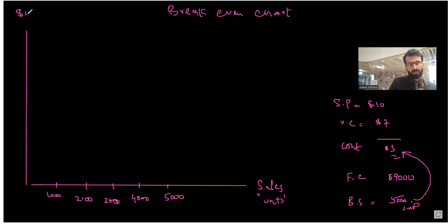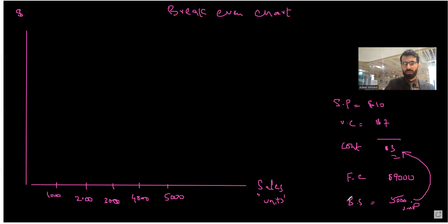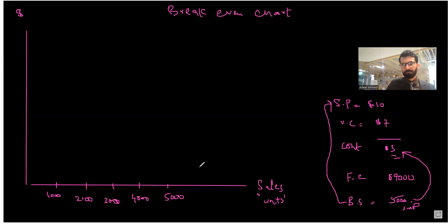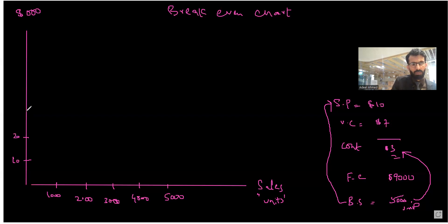The amount axis will represent our fixed cost, variable cost, total cost, and sales revenue. The maximum amount is the sales revenue — the highest value on the chart. At a selling price of $10 per unit, 5,000 units will generate a sales revenue of $50,000. So the maximum amount on the axis extends up to $50,000. We keep it in thousands: 10, 20, 30, 40, and 50.